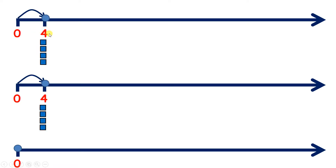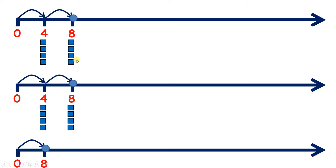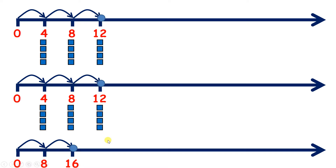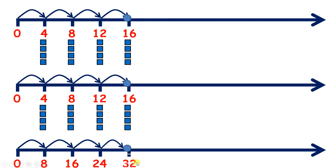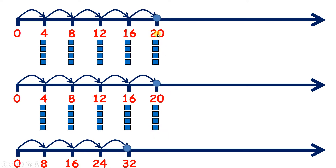So if we have four in the top and four in the middle, that gives us a total of eight. Now if we add another four to each of the top two lines, we now have a total of 16 blocks. Another four, and we have 24 blocks. Another four, we have 32, and another four gives us 20 plus 20, which is 40.